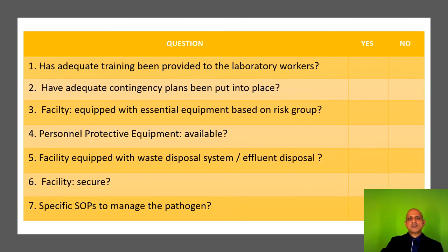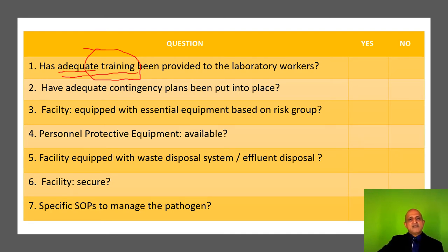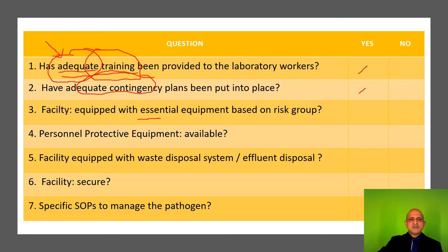We now move on to the next instrument, which must be discussed with your principal investigators and researchers at your laboratory. The first area is related to training — has adequate training been provided? You can refer to the specific definition of 'adequate' in the CWA 15793 Laboratory Biorisk Management Manual. Are there adequate contingency plans for accidental spills? If you have answered yes to both, the risk is significantly lower. Is the facility equipped with essential equipment such as a biological safety cabinet? You require at least a basic laboratory biological safety cabinet based on the relevant risk group.